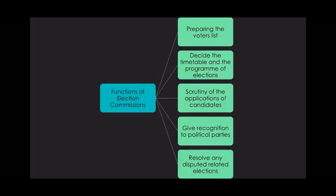The first function of the Election Commission is preparing the voters list. It is the responsibility of the Election Commission to prepare the list of eligible voters — updating the existing voters list, removing voters who are not eligible, and including the names of new voters.